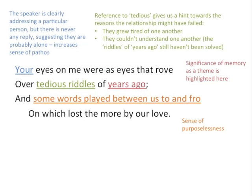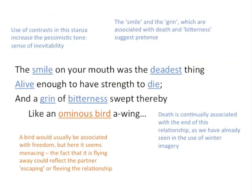In the third line of the second stanza, 'some words played between us to and fro' conveys that pessimistic tone and a sense of purposelessness. Moving to the third stanza, the key technique is contrast: 'the smile was the deadest thing, alive enough to have strength to die,' 'a grin of bitterness,' and even 'ominous bird' create contrasts throughout. These consistent contrasts heighten the pessimistic tone, and there's a sense of inevitability that whatever was good will turn into something bad — a lesson he seems to apply to any future relationship.